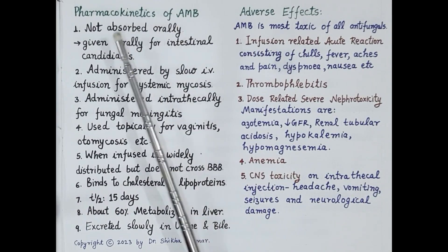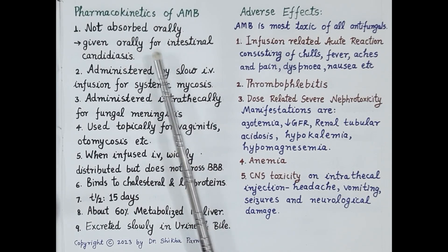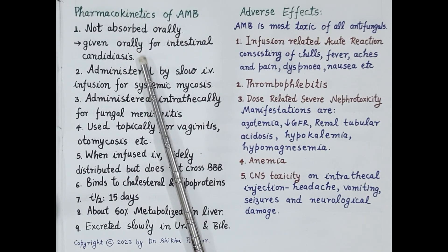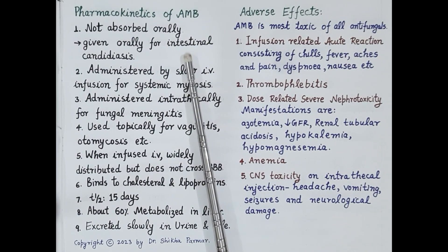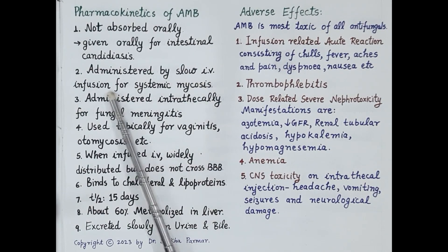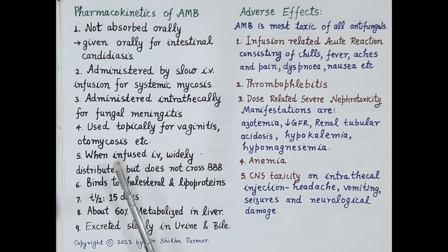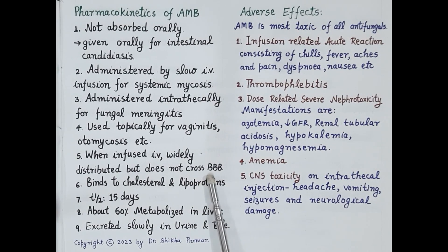Regarding pharmacokinetic features: amphotericin B is not absorbed orally. However, it can be given orally for intestinal candidiasis, where it is not absorbed systemically but produces effective local antifungal effect in the intestine. For systemic mycosis, it is administered by slow intravenous infusion. When infused IV, it is widely distributed in body tissues but does not cross the blood-brain barrier, and its penetration into cerebrospinal fluid is very poor.